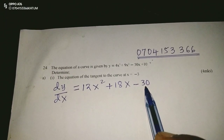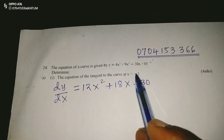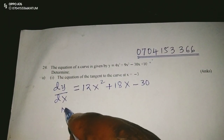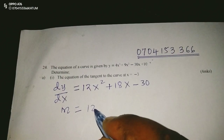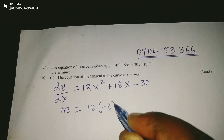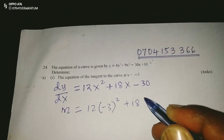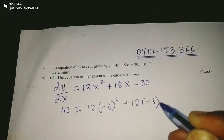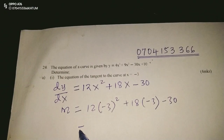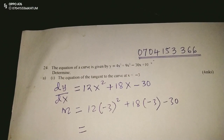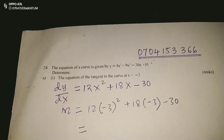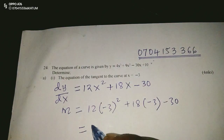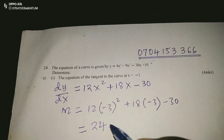We can now find the gradient at the point where x equals negative 3. The gradient m equals 12(−3)² + 18(−3) − 30. Working this out: 12 times 9 is 108, plus 18 times (−3) is −54, minus 30 — this gives us exactly 24. So the gradient is 24.